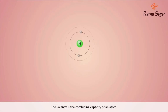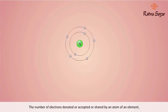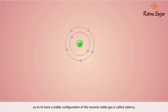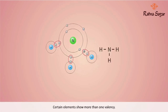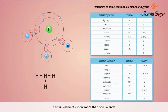Valency is the combining capacity of an atom. The number of electrons donated, accepted, or shared by an atom of an element so as to have a stable configuration of the nearest noble gas is called valency. The valency is equal to the number of electrons in the outermost shell, or valence shell, of an atom. Certain elements show more than one valency — they are said to exhibit variable valency.